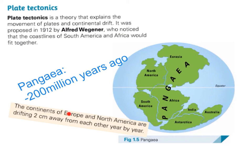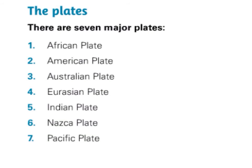The continents of Europe and North America are drifting two centimetres away from each other year by year. There are seven major plates: the African plate, the American plate, the Australian plate, the Eurasian plate — which is the plate that Ireland is located on — the Indian plate, the Nazca plate, and the Pacific plate.